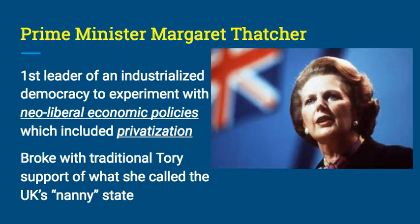Thatcher broke with the tradition of Conservative support for the welfare state. She promoted privatization — the selling off of government-owned industries into private hands, including the railroads. She also lowered taxes, cut costly social spending, and replaced some social services in housing and mass transit with private enterprise, really trying to change the role of government. Her government officially ended the post-war collectivist consensus period.